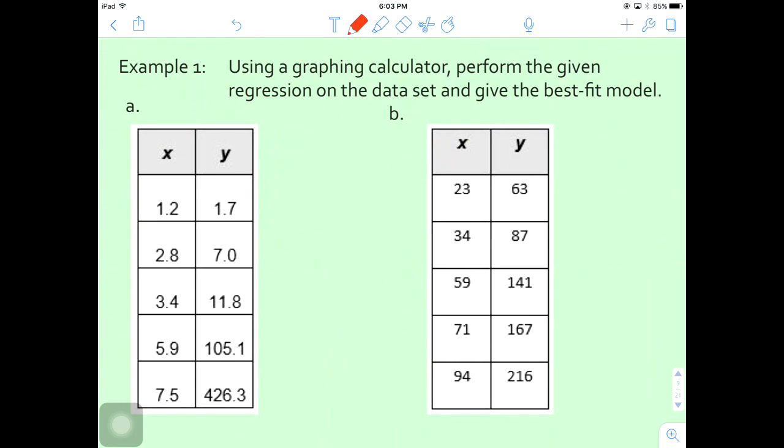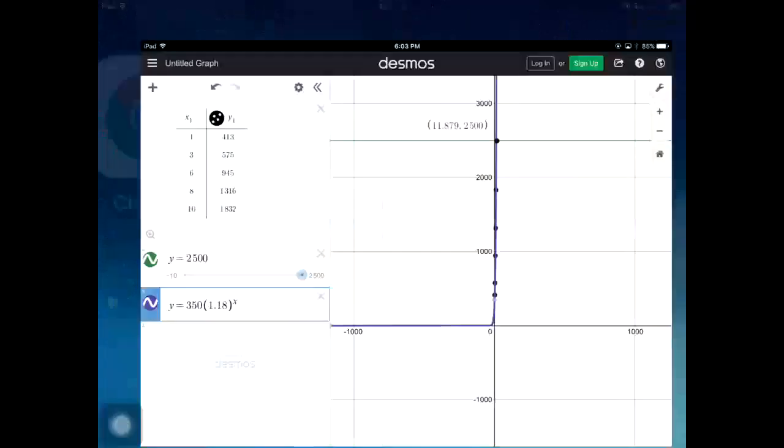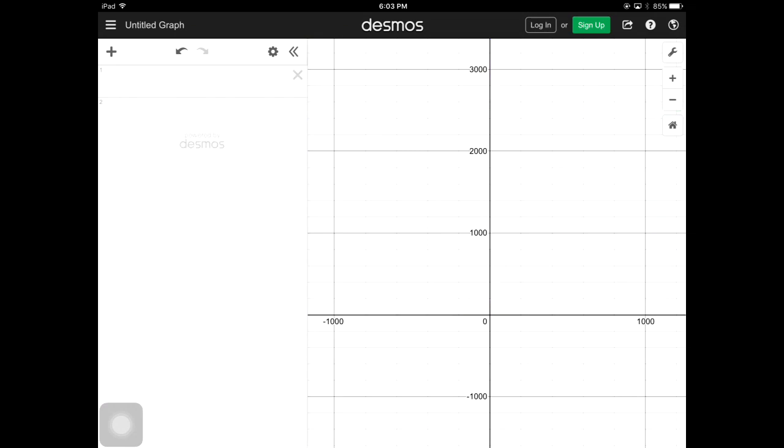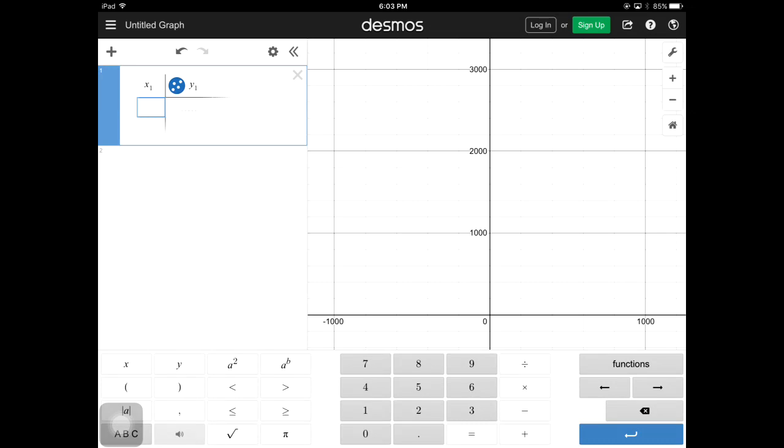Using a graphing calculator, perform the given regression on the data set and give the best fit. Today we're going to continue using our calculator, our Desmos, to help us generate. The first thing we need to do is to enter the set of data. Everyone go ahead and open up your Desmos and enter your set of data.